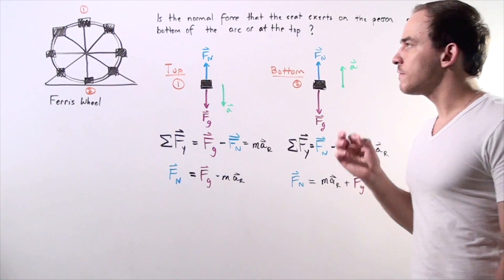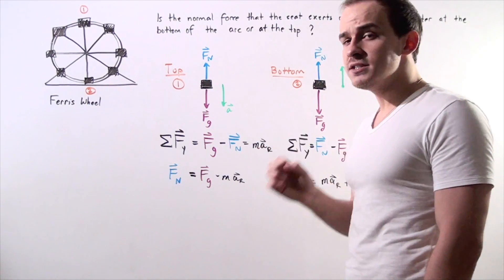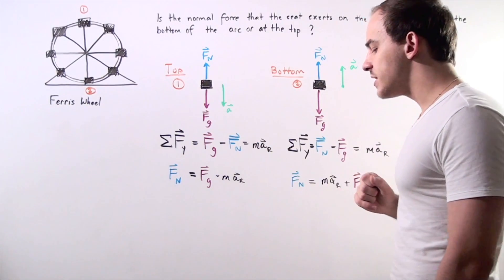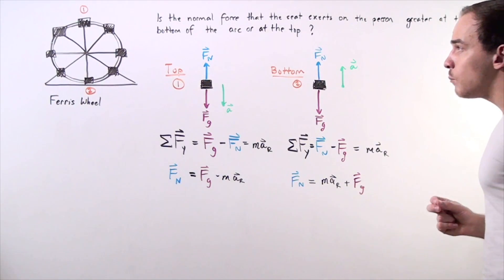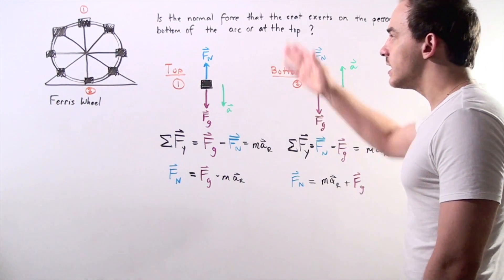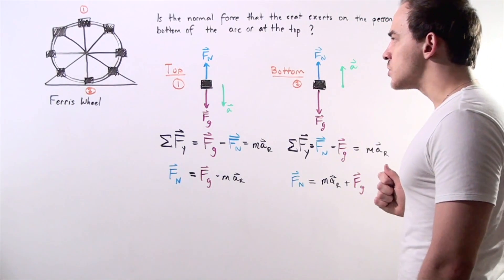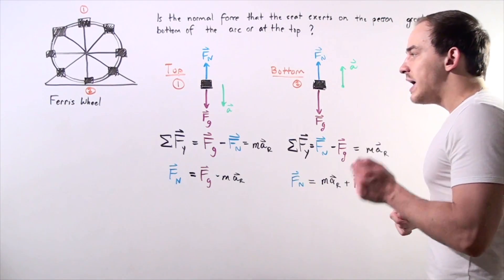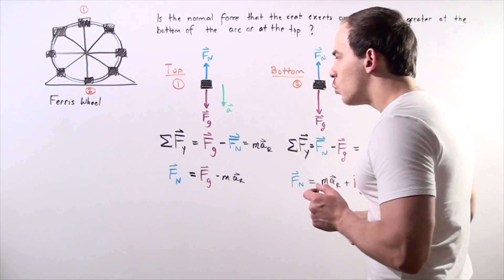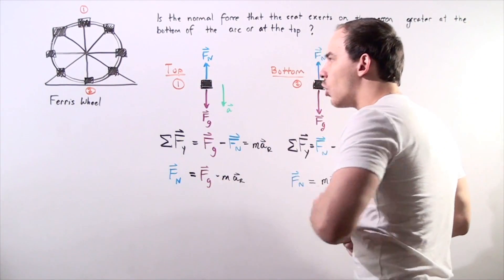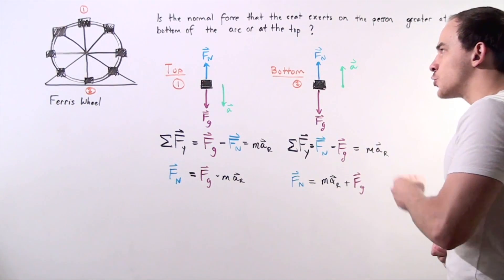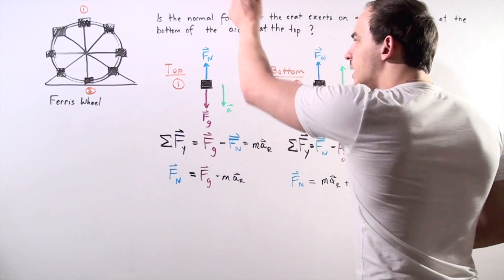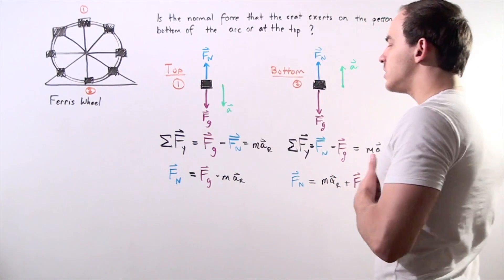To answer this question conceptually, we must examine the free body diagrams — the force diagrams at the top as well as at the bottom. Starting with the top, we have two forces acting along our y-axis on our person. We have the gravitational force which acts downward along the y-axis, and we have the normal force created by the seat on the person that acts upward along the y-axis.